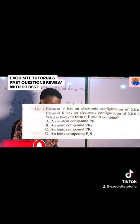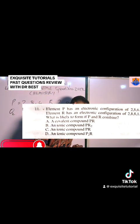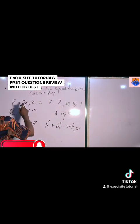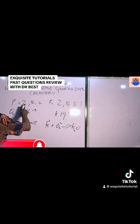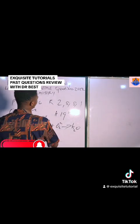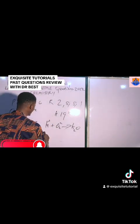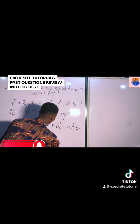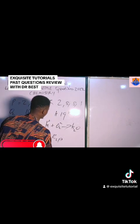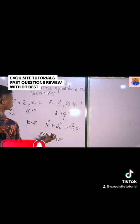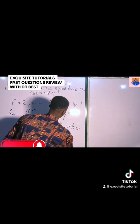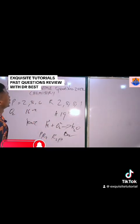Looking at our options: Option A, covalent bond PR, is out. Now remember, P represents the non-metal and R represents the metal. So the compound formed is going to be PR2 — or more correctly written as R2P since metals come first, but PR2 and R2P represent the same compound. Therefore, the correct answer is Option B.